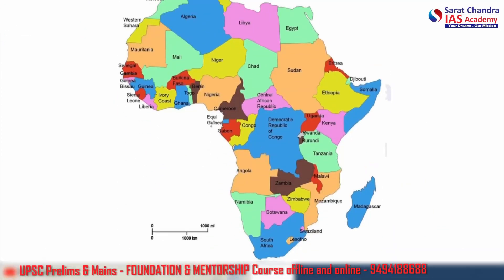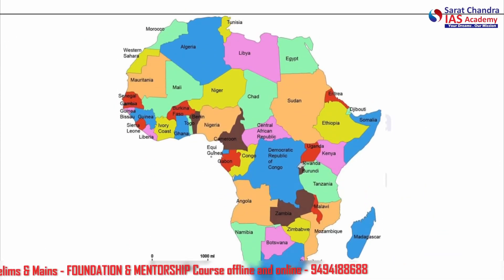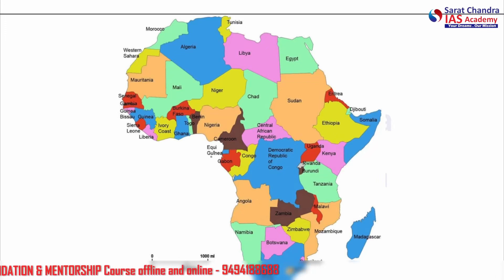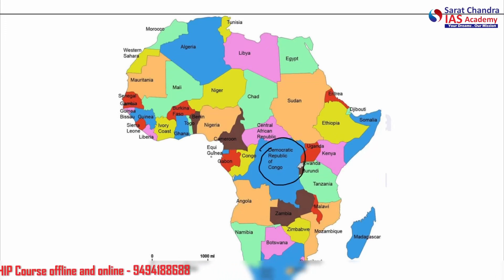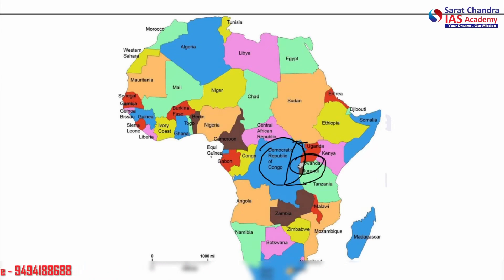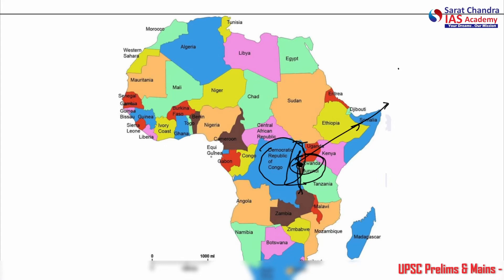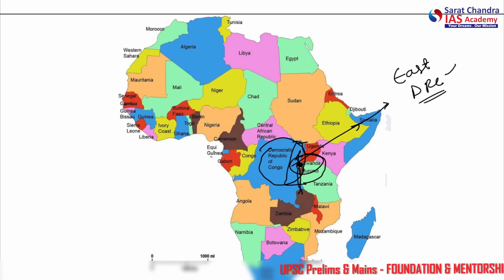Now the mapping portion. We are talking about this area — this is DRC, the Democratic Republic of Congo, and we are talking about the eastern side. Rwanda is on this side, near the Congo River. This is the flow area of the Congo River. The eastern portion of DRC is where the conflict is going on.